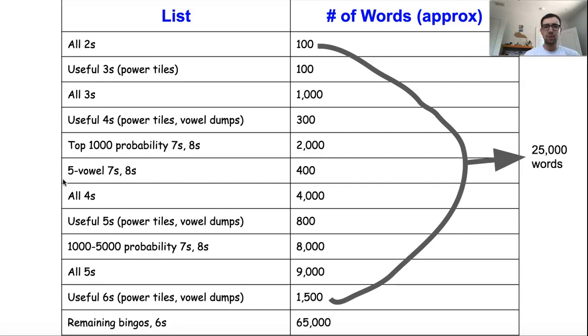And then after that, I generally recommend diving a little bit deeper into the bingos before finally finishing out all of the fives and some of the useful six-letter words. And as you can see, basically the first 11 rows of this table are what I'll be going over in detail in this series, and that consists of about 25,000 words. Now, this might sound like a lot of words, but it's actually a pretty small fraction of all of the two through eight-letter words in the Scrabble dictionary, which are the most useful words.